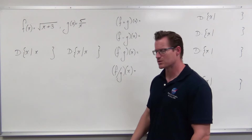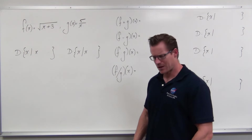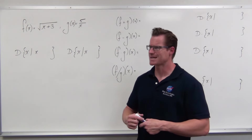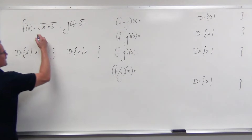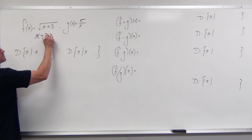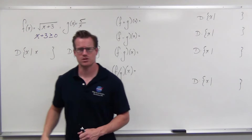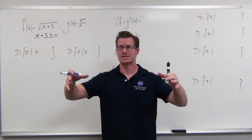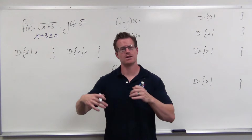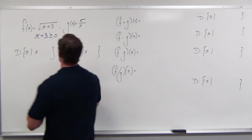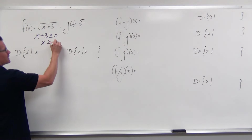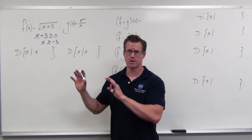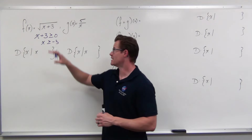Looking at the square root function, square roots want their radicand to be positive or at least zero. So we need the inside — the radicand — to be greater than or equal to zero. If not, we get imaginary numbers, and that's an issue. Solving gives us x is greater than or equal to negative three in order for this to give us real number outputs. That is the domain of that function.